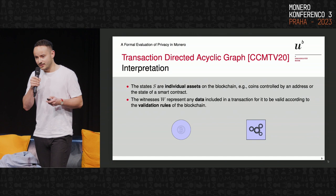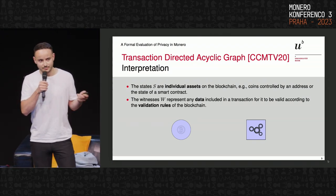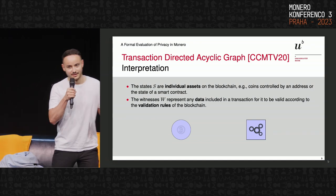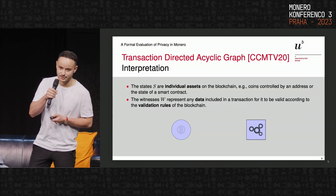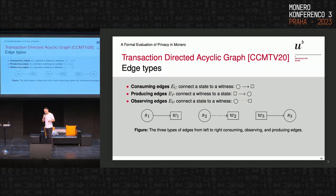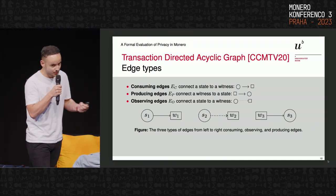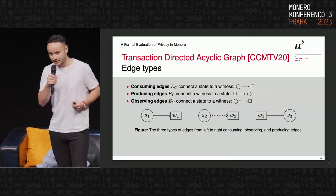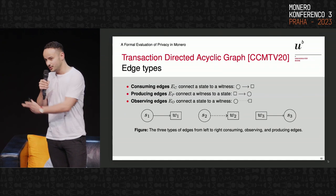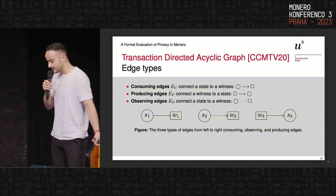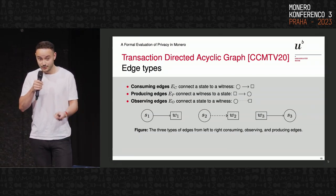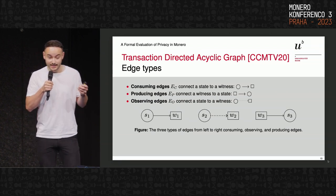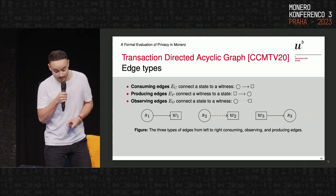A state is an individual asset in the blockchain, and a witness represents the blockchain validation rule — for example, one of these rules is to verify ownership of a coin before spending it, i.e., verification of the signature. We have several edge types: consuming edges (think of spending a coin), producing edges (when you transfer a coin to another person, a new state is produced), and observing edges (when you use a state as a decoy, you only observe it without altering it).